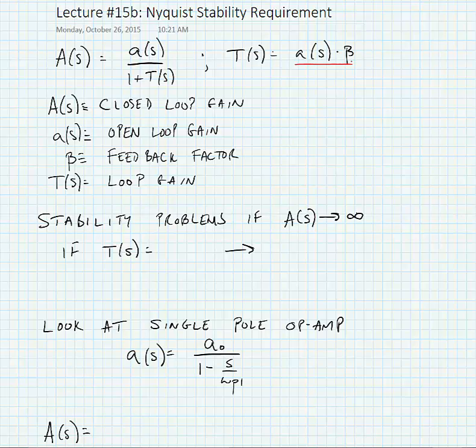We keep introducing these confusing terminologies, so I want to clarify them one more time. Big A sub s is the closed-loop gain - this is the gain after we've added feedback. Little a sub s is the open-loop gain, or the gain before feedback.